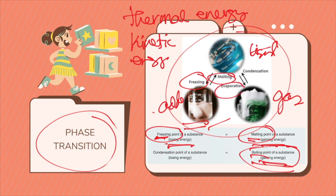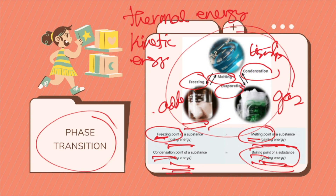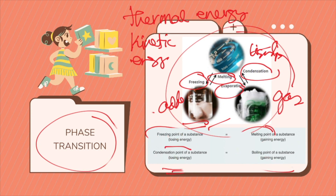The next one is condensation. Condensation is the process of a gas transforming to liquid when heat is removed — it is the reverse process of boiling. This occurs when the temperature of the gas is cool enough for the particles to slow down and attract each other, forming a liquid. The temperature at which this phase change occurs is the condensation point, which is the same temperature as the substance's boiling point. The transition points in phase changes are equal; the difference is whether a substance is gaining or losing energy.